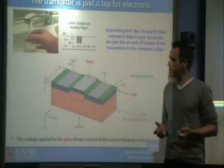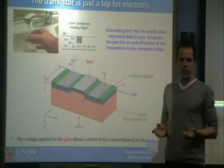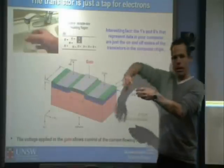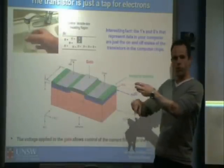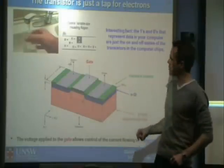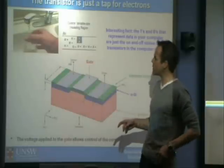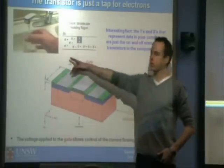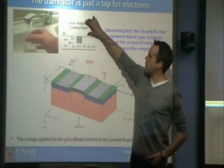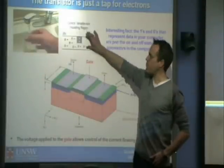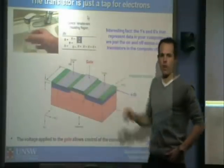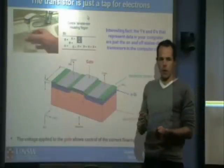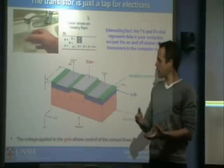So how does a transistor work? A transistor is really just a tap for electrons. You can imagine a water tap at home — when you turn the tap on, the water flows, and when you turn it off, the water stops flowing. A transistor is almost exactly the same idea. You have a flow of electrons coming through, and you can turn this tap for electrons on and off. The way we do it is not with a plunger that goes up and down, but we use electrostatics.